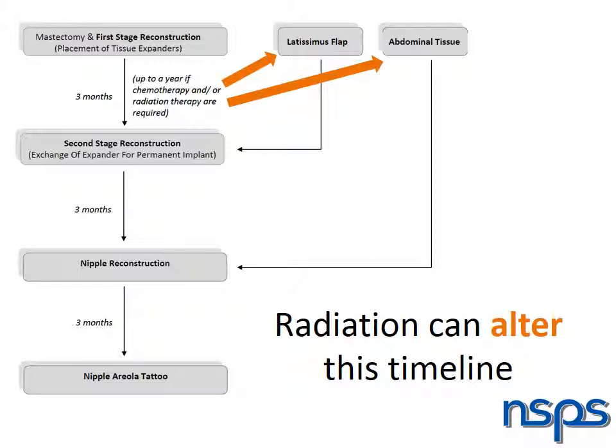Patients who have radiation may require tissue reconstruction with a latissimus flap or abdominal tissue flap. This will be determined after radiation is complete, prior to the second surgery, and therefore may alter the previously described timeline.